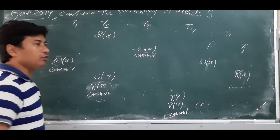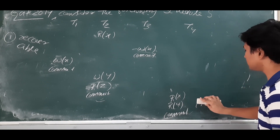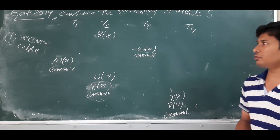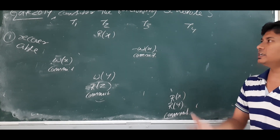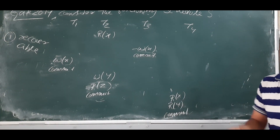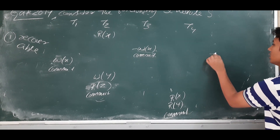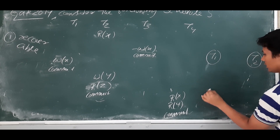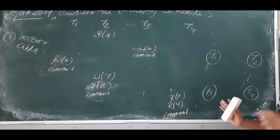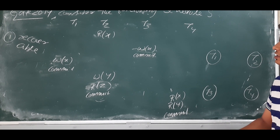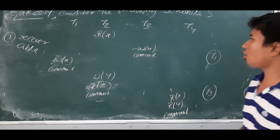The given schedule is a recoverable schedule. Now we will check whether it is conflict serializable or not. To check conflict serializability, we draw the precedence graph. The precedence graph consists of nodes and directed edges. All transactions in the schedule act as nodes — T1, T2, T3, T4. The directed edges are determined by finding conflict operations.